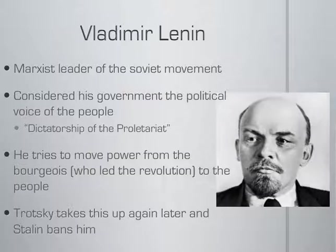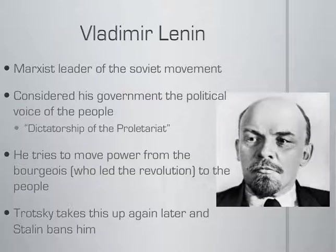As I write here, Lenin is a Marxist, and he's pushing to create a dictatorship of the proletariat. For him, that's a stage on the way to communism, the way Marx wrote it. So he's in the process of moving the revolution from the bourgeois who led the revolution to the people. And then his right-hand man is Trotsky — they see eye-to-eye on this stuff, and the two of them are really sort of the leaders of this movement.